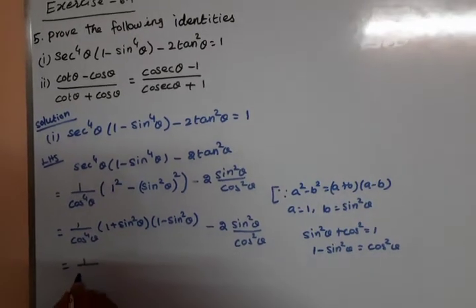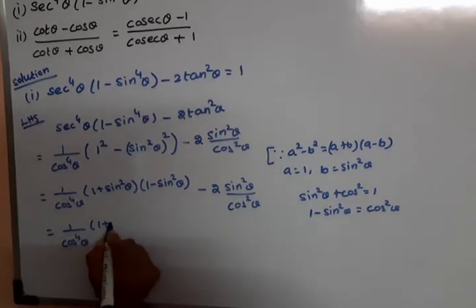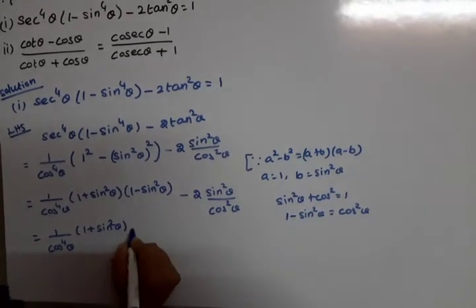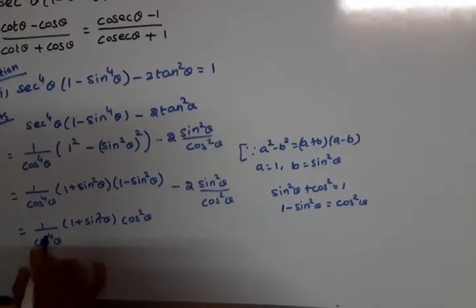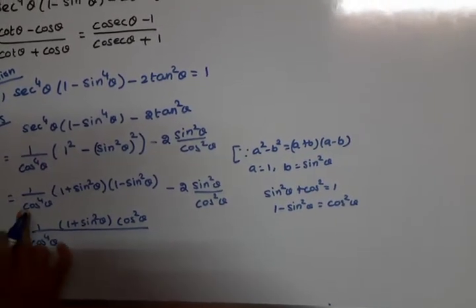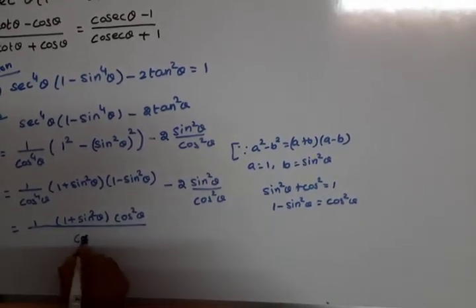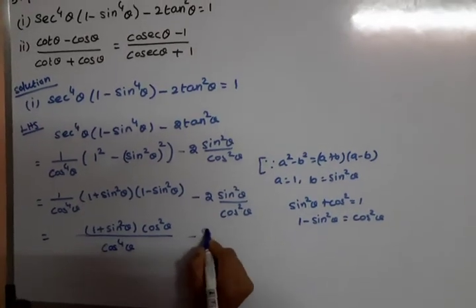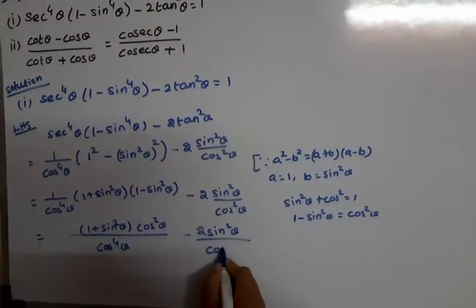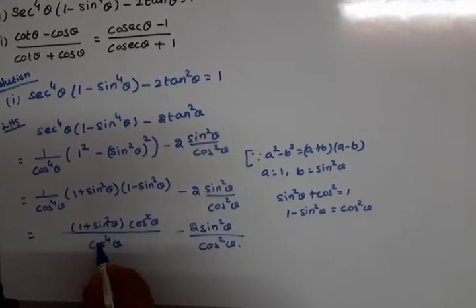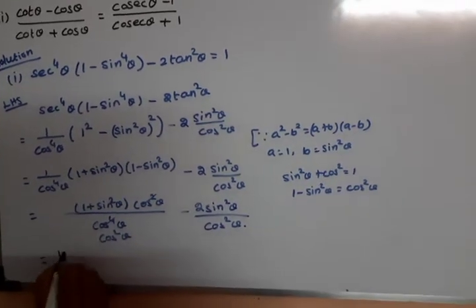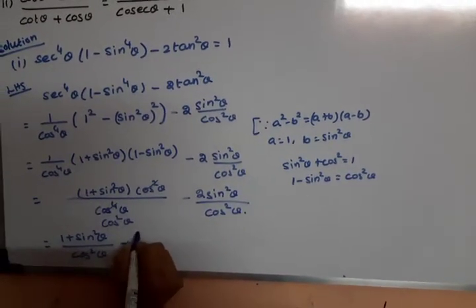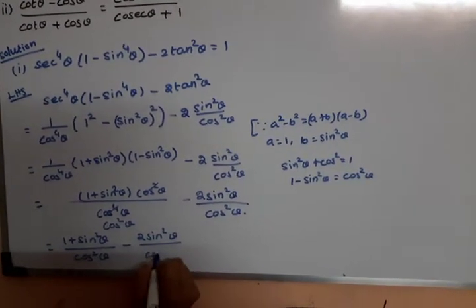So we have 1 divided by cos⁴θ into (1 plus sin²θ) into cos²θ. This means cos⁴θ cancels with 1 over cos⁴θ. We are left with 1 plus sin²θ divided by cos²θ, minus 2sin²θ divided by cos²θ.